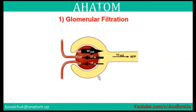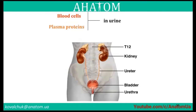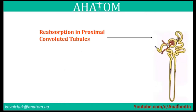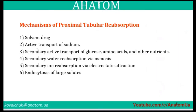Glomerular filtration involves different sizes of afferent and efferent vessels. Blood cells and plasma proteins remain in blood, and about 99% of water and other useful small molecules are filtered and reabsorbed back into the plasma by the renal tubules. Reabsorption in the proximal convoluted tubules involves active transport of sodium, secondary active transport of glucose, amino acids, and other nutrients, water reabsorption via osmosis, and secondary ion reabsorption via electrostatic attraction.